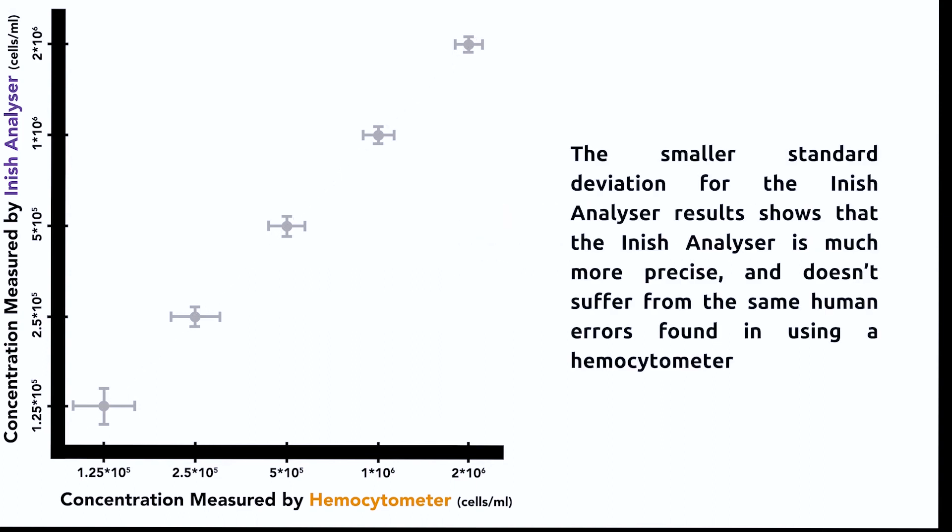You'll notice that the Inish analyzer results have a smaller standard deviation, showing that the Inish analyzer is much more precise, and doesn't suffer from the human errors found in using a hemocytometer.